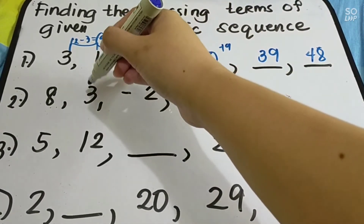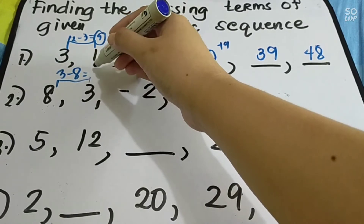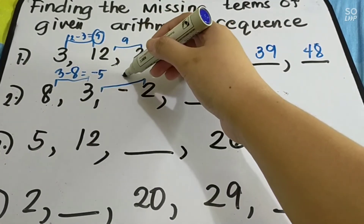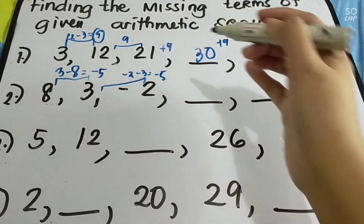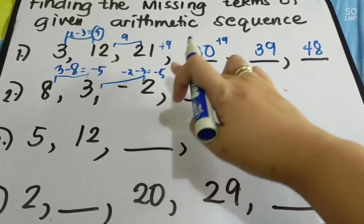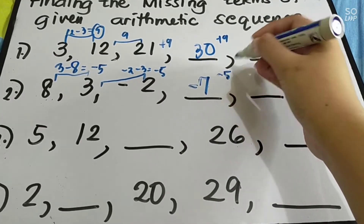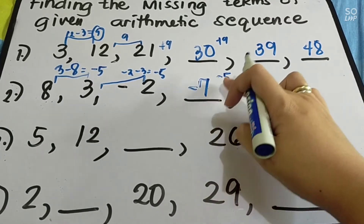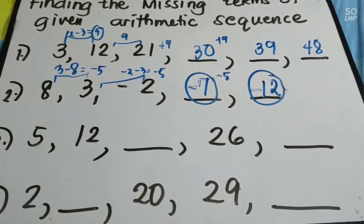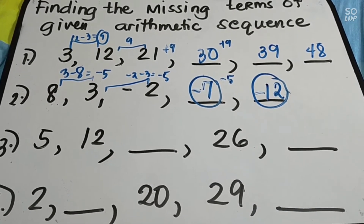Next example: we have 8, 3, negative 2, and two missing terms. The common difference: 3 minus 8 = negative 5. Check: negative 2 minus 3 = negative 5. So add negative 5 to negative 2: negative 2 plus negative 5 = negative 7. Then negative 7 plus negative 5 = negative 12. Those are the missing terms. Make sure you know addition and subtraction of integers with positives and negatives so you won't get confused.